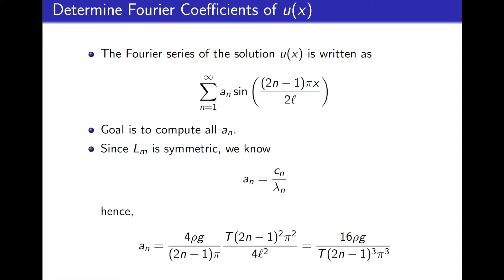Since Lm is symmetric we know we can use the formula that we computed in class multiple times, the fact that the a_n coefficients will be cn divided by the eigenvalues lambda_n. Putting this all together we have the following formula for a_n. It will be 16 times rho g divided by the tension t times (2n minus 1) cubed times pi cubed.